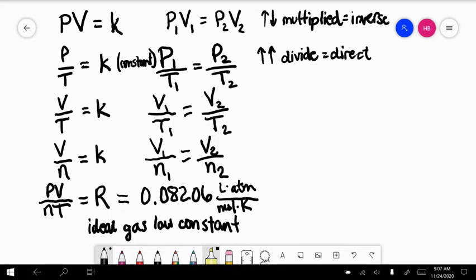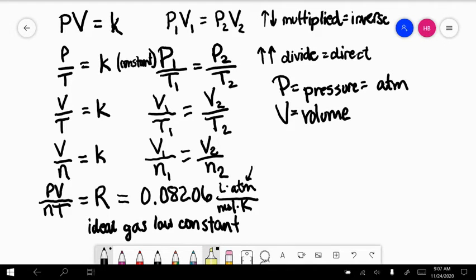So this means that P, in order to be using this number, P is equal to the pressure, and it has to be measured in atmospheres because of the ideal gas law constant. V is our volume, and if you look in here, it has to be measured in liters in order to use the ideal gas law constant.